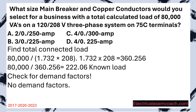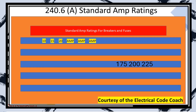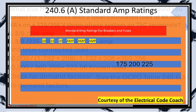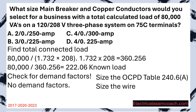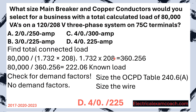Let's size our overcurrent protective device first, based off of 222 amps. We head to table 240.6A and we choose the next standard size. In this case, it's going to be a 225. Now we can size our wire. We head to our primary ampacity table. We're going to be on the copper side of the table in the 75 degrees C column, and we need to go down and find a wire that covers 222 amps. In this case, we're going to select a 4-0. When we put it on a 4-0 wire, we're going to select it, and we're all done.